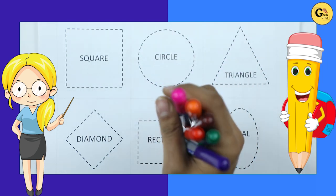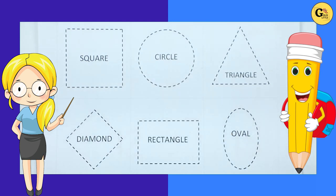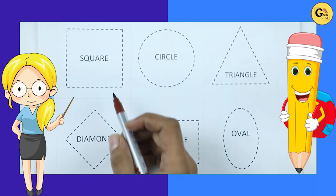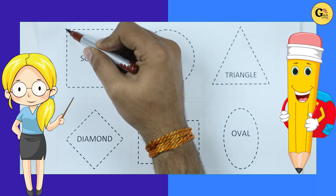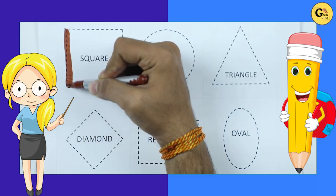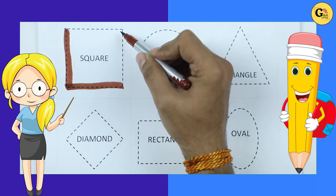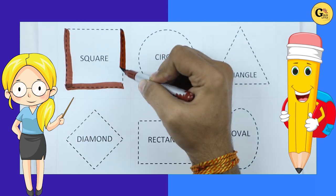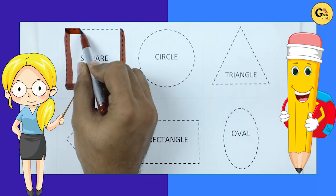Learn shapes. It's square. We draw square with brown color. Square.